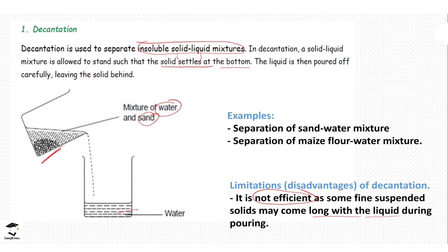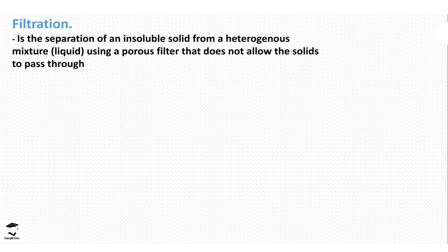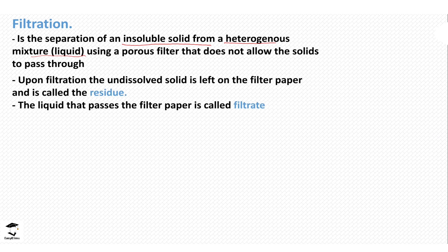Filtration is the separation of an insoluble solid from a heterogeneous mixture — in our example, separating sand from muddy water. In filtration we use something called a filter paper. When you pour the mixture onto the filter paper, some of the solid is left on the filter paper; we refer to this as the residue. The liquid that passes through the filter paper is called the filtrate.